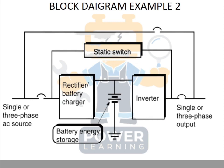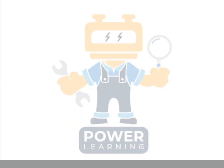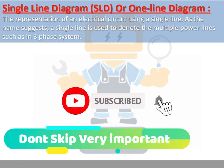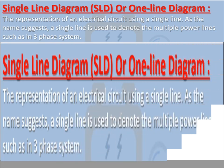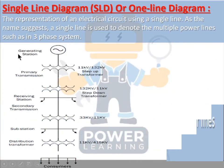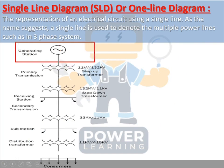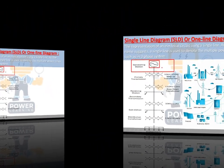Moving on, we will discuss the single line diagram, which is abbreviated as SLD or one line diagram. The definition is: a representation of an electrical circuit using a single line, where that single line denotes multiple power lines such as in a three-phase system. In the example picture, the first symbol shown represents a whole generating station.